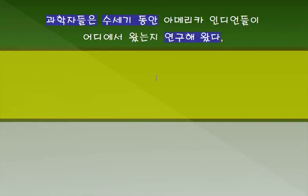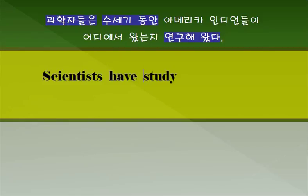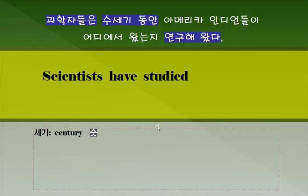연구하다 라는 단어는 'study'가 되겠죠. 과학자들은 'scientist', 연구하다는 'study'입니다. 전부터 지금까지 연구해온 것이니까 현재 완료 시제를 쓰는 것이 좋습니다. 'Have studied'. 수세기 동안—세기는 백 년을 말하는 거죠—'century'입니다. 수세기 동안은 'for centuries'이렇게 표현하면 됩니다.